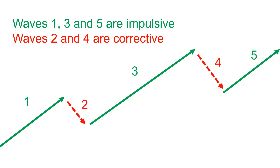First of all, to really understand the Elliott Wave Method it is important to understand what an impulse is. In my videos I often talk about impulsive moves and impulsive waves, but what is actually an impulsive move? So first of all it is important to understand that. The general understanding within the Elliott Wave Method is that moves that go into the trend direction are impulsive.